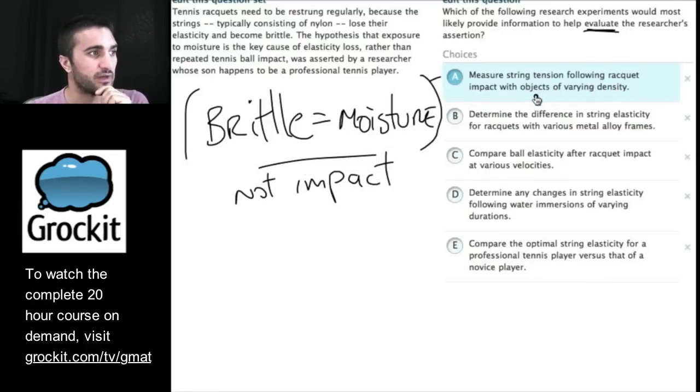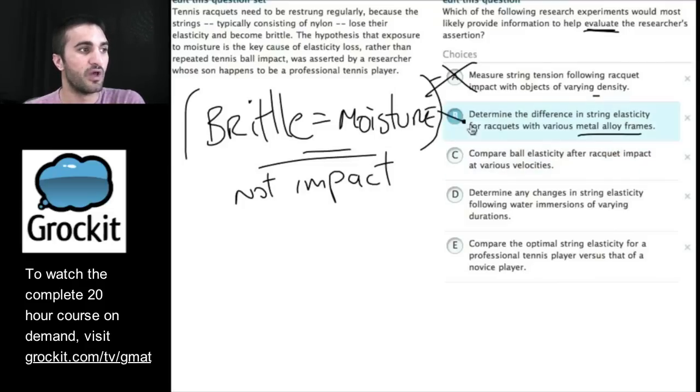So, A, measure string tension following racket impact with objects of varying density. Well, the assertion was that it was moisture causing it. So, this is not going to address that issue. B, determine the difference in string elasticity for rackets with various metal alloy frames. Again, the assertion is that moisture is causing the brittleness. So, testing various metal alloy frames won't help me evaluate that. Compare ball elasticity after racket impact at various velocities. Again, it doesn't seem to be addressing the issue that they want to evaluate as to whether or not it's moisture that's causing the tennis racket strings to become brittle.